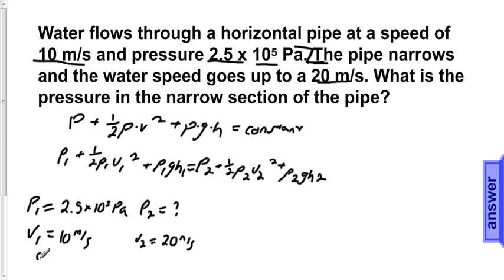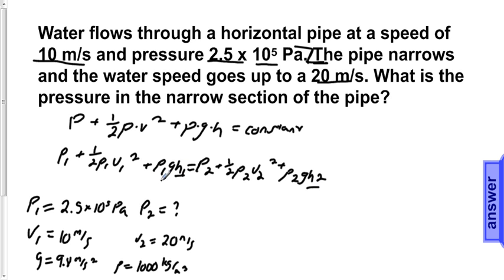As always, we have our constant values: gravity equals 9.8 meters per second squared. And since we use water in both sections of the pipe, rho equals 1000 kilograms per meter cubed. Because the height never changes throughout the procedure — meaning H1 equals H2 — the terms rho·g·H1 and rho·g·H2 are equal and cancel out, since rho, g, and H are constant. As a result, we can remove them from the equation, leaving us with P1 plus one-half rho V1 squared equals P2 plus one-half rho V2 squared.